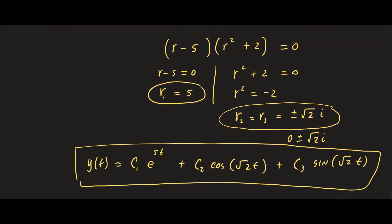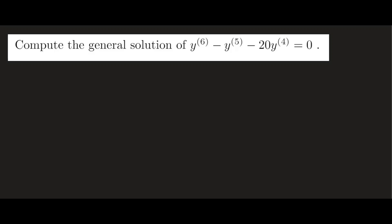Now let's look at a second example. We're again finding the general solution of a higher order homogeneous differential equation. We write out its characteristic polynomial assuming solution form e to the rt. We have r to the sixth power minus r to the fifth power minus 20 r to the fourth equals zero. This is factorable — we can pull out the GCF, which is r to the fourth, leaving r squared minus r minus 20 equals zero.